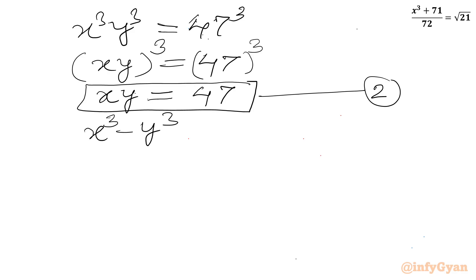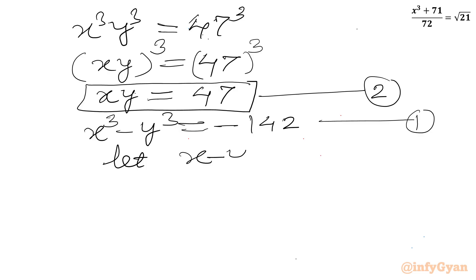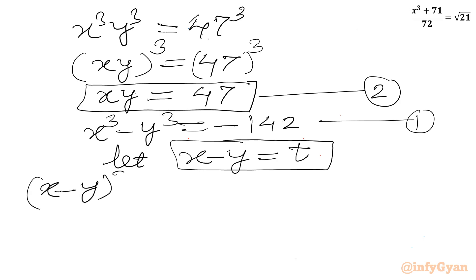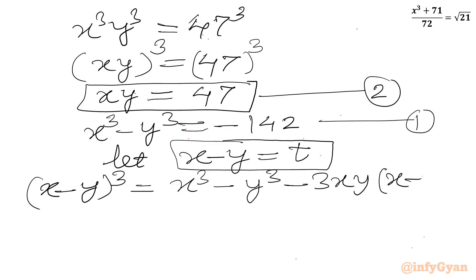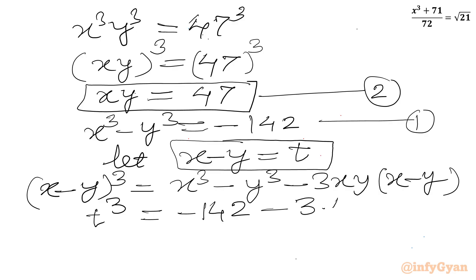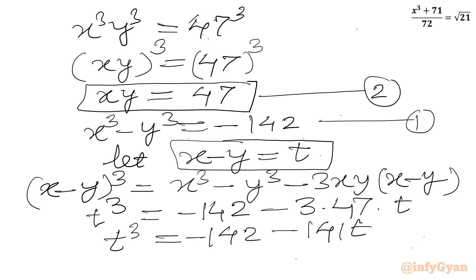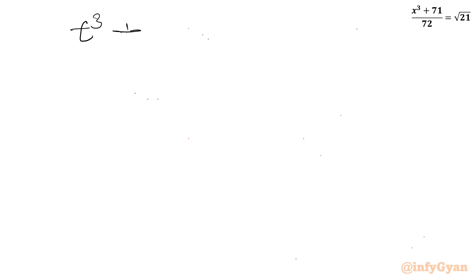Equation 1 was x³ minus y³ equal to negative 142. Now let us assume x minus y equals t. We can use the algebraic formula: (x − y)³ = x³ − y³ − 3xy(x − y). So t³ = (x³ − y³) − 3·xy·t, which gives t³ = −142 − 3·47·t, or t³ = −142 − 141t.